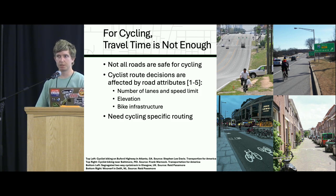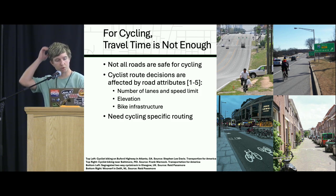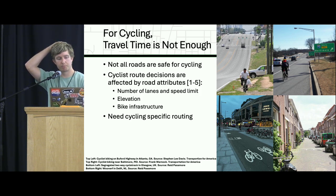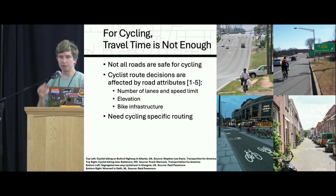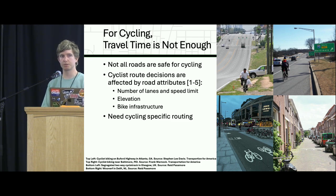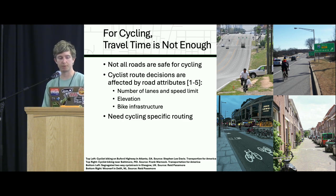We see this in research: cycling route decisions are often affected by road attributes such as the number of lanes on the road and speed limit, as well as elevation and the presence of bike infrastructure. So there's a need for cycling-specific routing that considers more than just travel time.